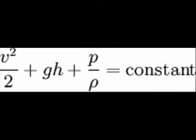This is the formula for Bernoulli's principle, where V is the velocity of the fluid before hitting the airfoil, G is gravity, H is the height, P is the pressure, and rho is the density. This equation only pertains to incompressible gases that are flowing at low Mach numbers.